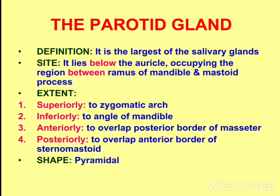The parotid gland is the largest of the salivary glands. Its site is located below the auricle, occupying the region between the ramus of the mandible and the mastoid process. It extends superiorly up to the zygomatic arch, inferiorly up to the angle of the mandible, anteriorly up to the posterior border of the masseter, and posteriorly it overlaps the anterior border of the sternomastoid. Its shape is pyramidal, as we can see in the diagram.